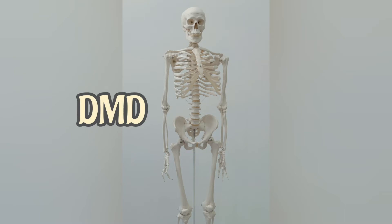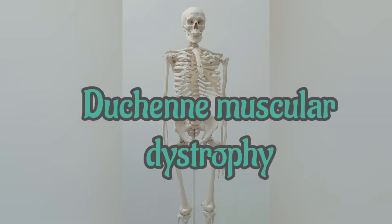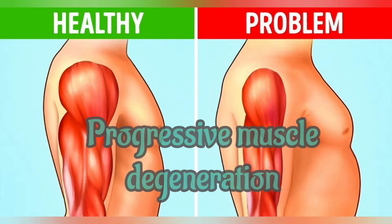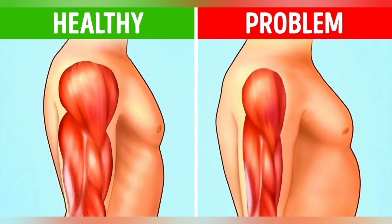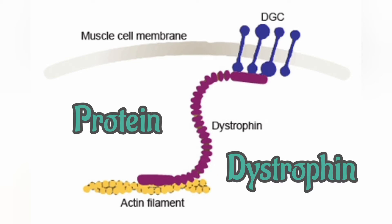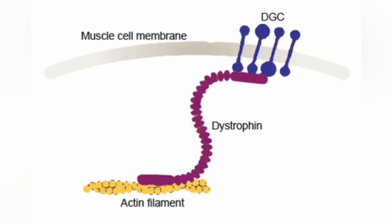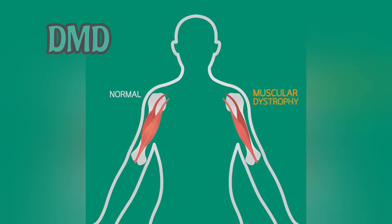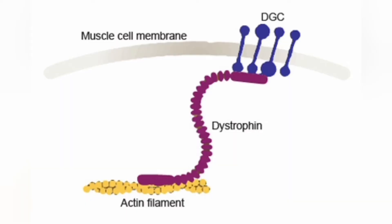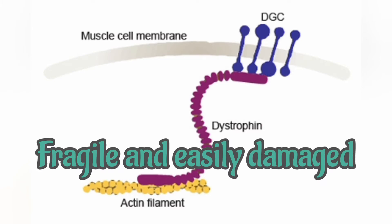What is DMD? Duchenne Muscular Dystrophy is a genetic disorder characterized by progressive muscle degeneration and weakness due to the alterations of a protein called dystrophin that helps keep muscle cells intact. DMD is one of four conditions known as dystrophinopathies. Lack of the dystrophin protein in muscle cells causes them to be fragile and easily damaged.